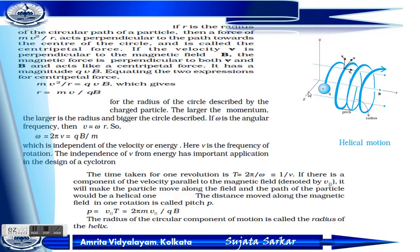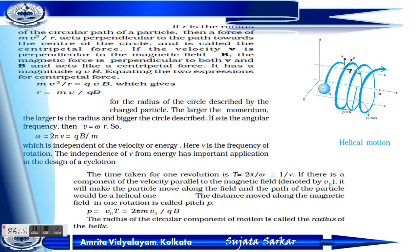If R is the radius of the circular path, then the force is mv²/R. It acts perpendicular to the path towards the centre of the circle. The magnetic force is perpendicular to both V and B, and it always acts like a centripetal force.